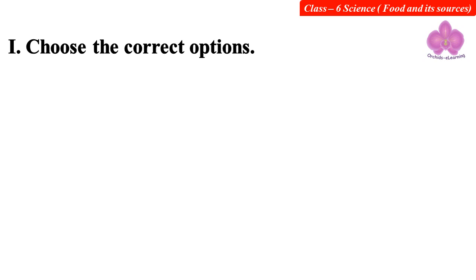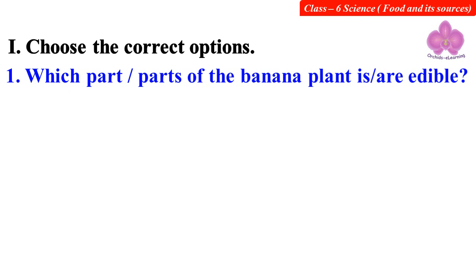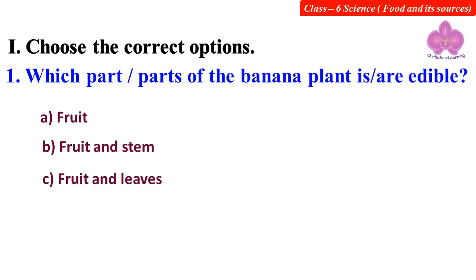Question 1. Choose the correct options. Which part or parts of the banana plant is or are edible? Option A: Fruit. Option B: Fruit and stem. Option C: Fruit and leaves. Option D: Fruit, stem and leaves. Answer: A. Fruit.